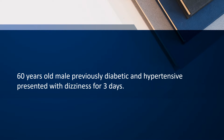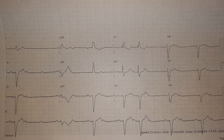We will be discussing a case of a 60-year-old male who presented with dizziness for the past three days. This is the ECG of the patient, done in the emergency. What we can see is that this is a bradyarrhythmia. Now there are two possibilities for a bradyarrhythmia: one is sinus node dysfunction, and the other is AV block.